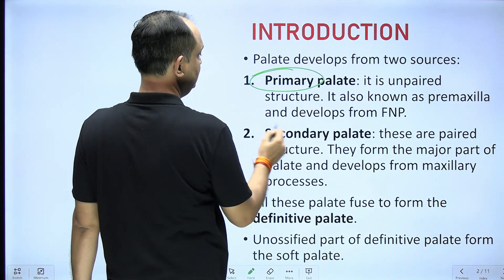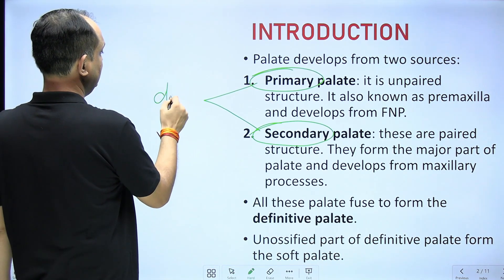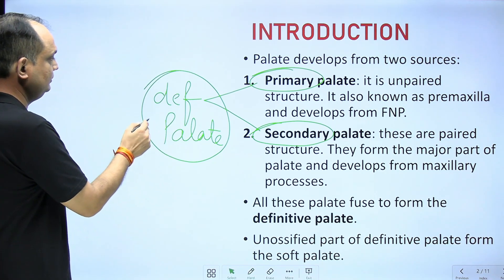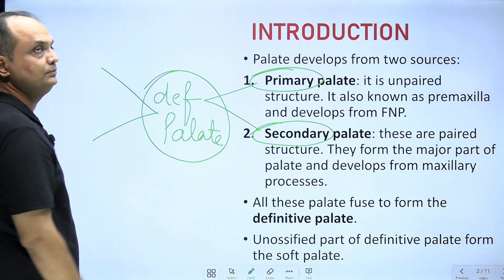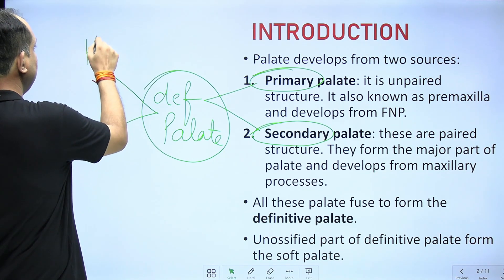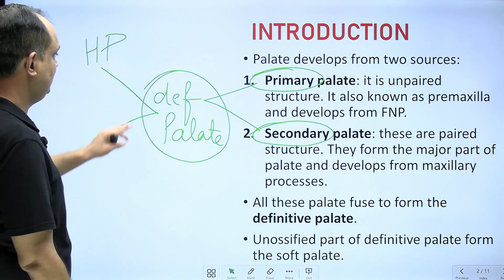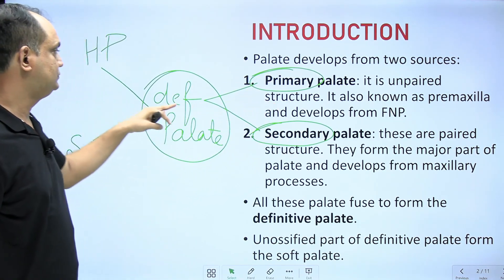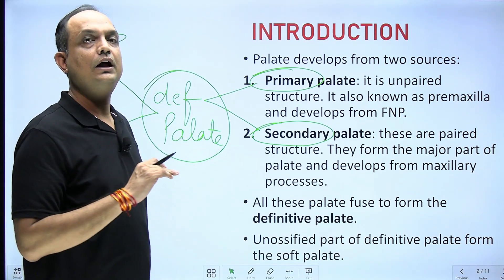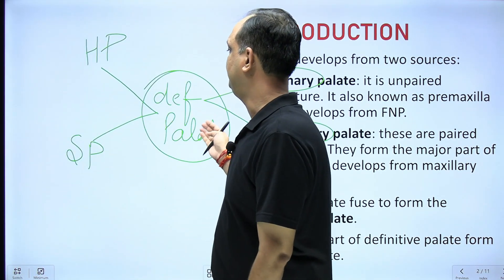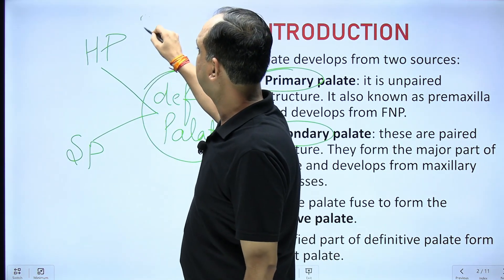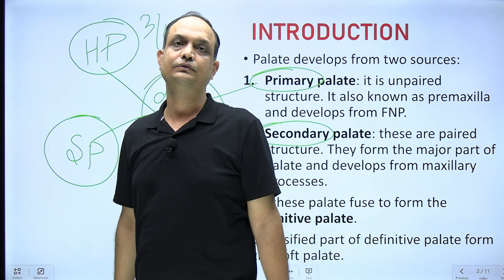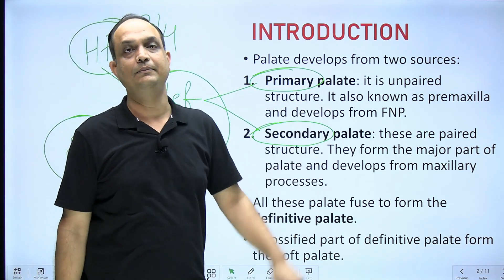The palate develops from two sources: primary palate and secondary palate. Primary and secondary palate fuse together to form the definitive palate. This definitive palate is a membranous palate. Later, ossification occurs — under membranous ossification, three-fourths of the definitive palate ossifies to form the hard palate, and the remaining one-fourth un-ossified area forms the soft palate.